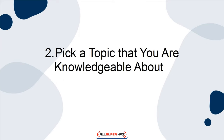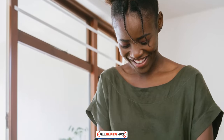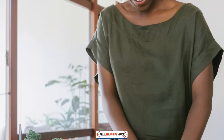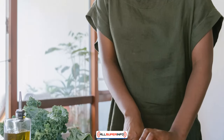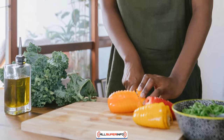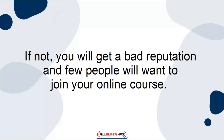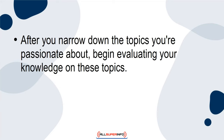The second step to choosing the best course content is to select a topic that you are also knowledgeable about. Although you do not need to be a professor or have the most extensive knowledge on the topic, you must be able to talk about it in an informative and educated way. If not, you'll get a bad reputation and few people will want to join your online course. After you narrow down the topics you're passionate about, begin evaluating your knowledge on these topics.